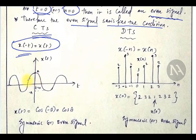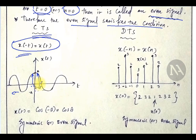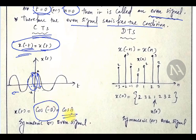See here, this is the x of t signal. For some positive time value, this is the positive side and this is the negative side. For example, at 2 seconds, x of 2 is equal to x of minus 2, meaning x of t equals x of minus t. Any signal which exhibits this symmetric nature is called an even signal. For example, we know that cos of minus theta equals cos theta — this is the example for a symmetric signal.